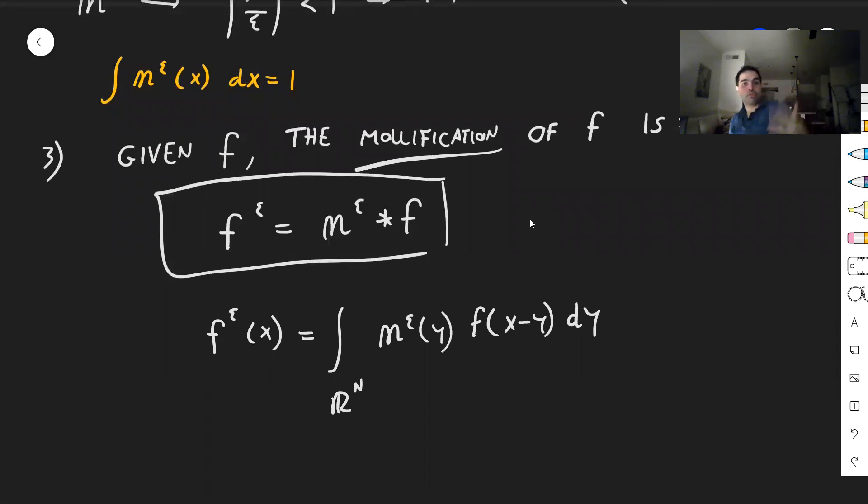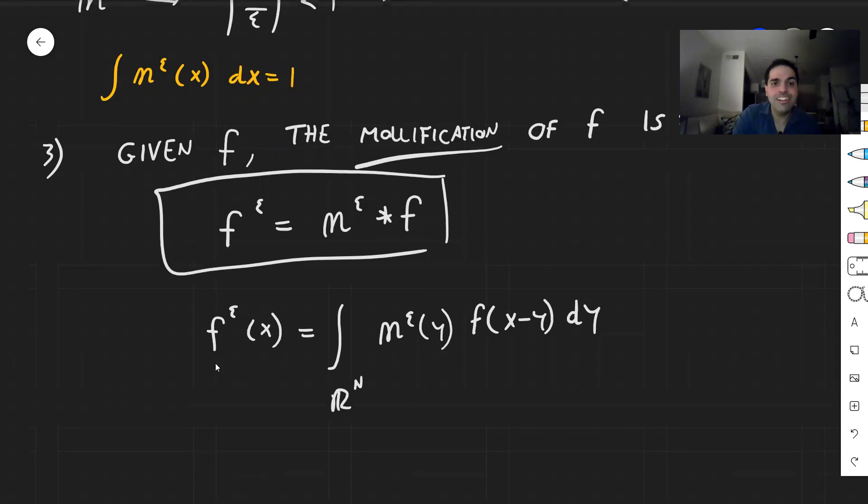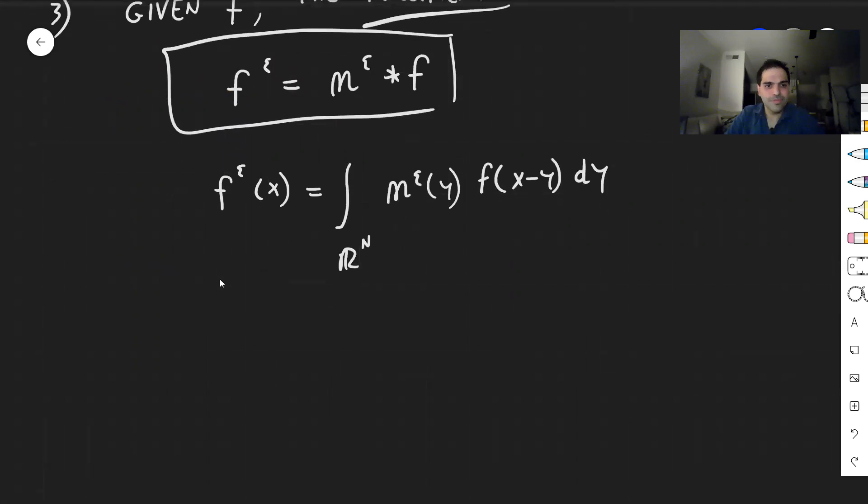All right, and what properties do mollification have? So properties, well I hope they behave like they want us to behave. So first of all, the mollification is infinitely differentiable. f is in C infinity of R^n for all epsilon. So it is indeed a smooth version.